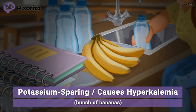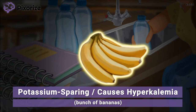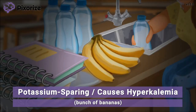Let's cover one key aspect of spironolactone that makes it a bit different than the other diuretic drugs. Notice how this student also brought extra amounts of the classic school snack — bananas. Here at Pixarize, we use bananas to symbolize potassium, because bananas have a lot of potassium in them. Since this girl has brought extra bananas, this is our symbol for increased potassium. Spironolactone increases potassium levels in the body as a potassium-sparing diuretic, meaning it works to prevent the loss of potassium in the urine. In high doses, this buildup of potassium can even lead to overly high levels of potassium, known as hyperkalemia.